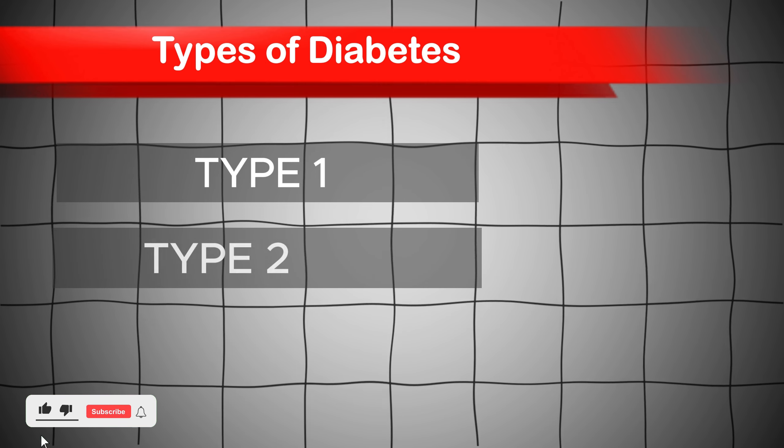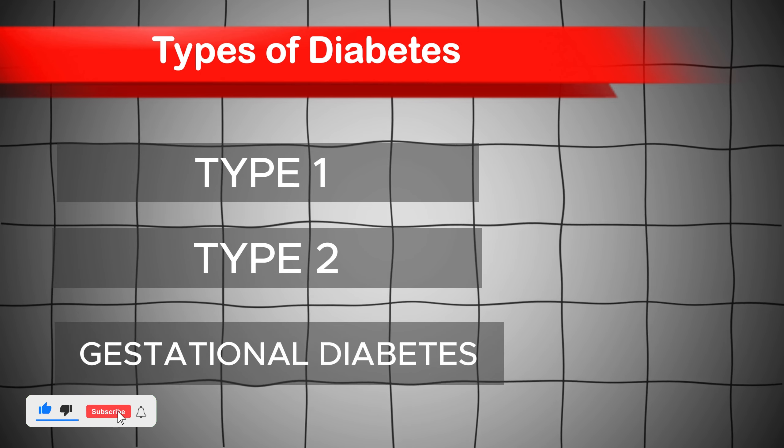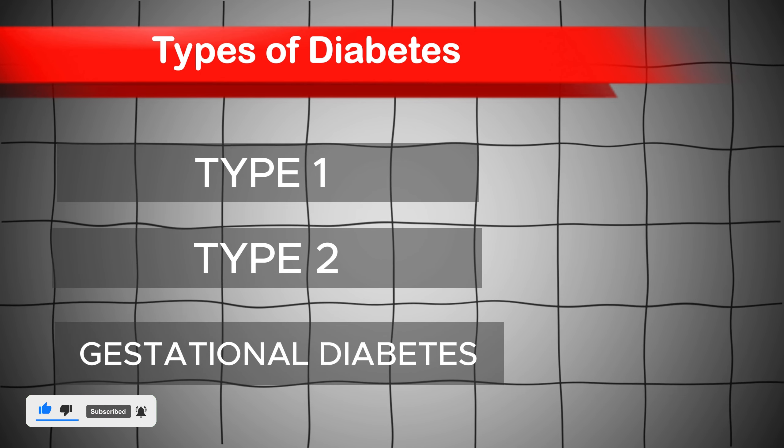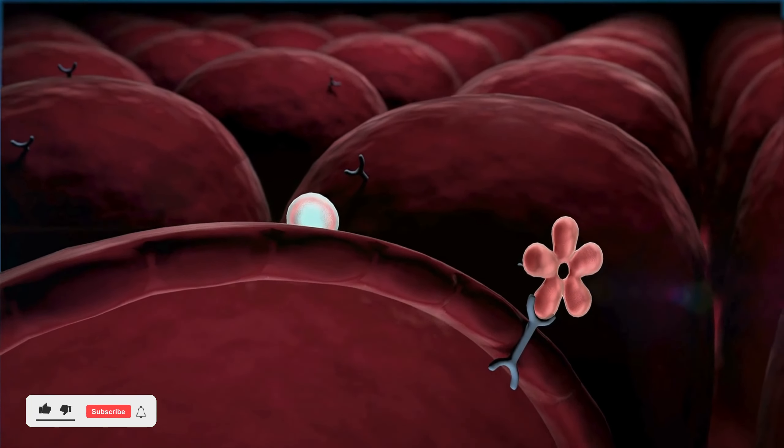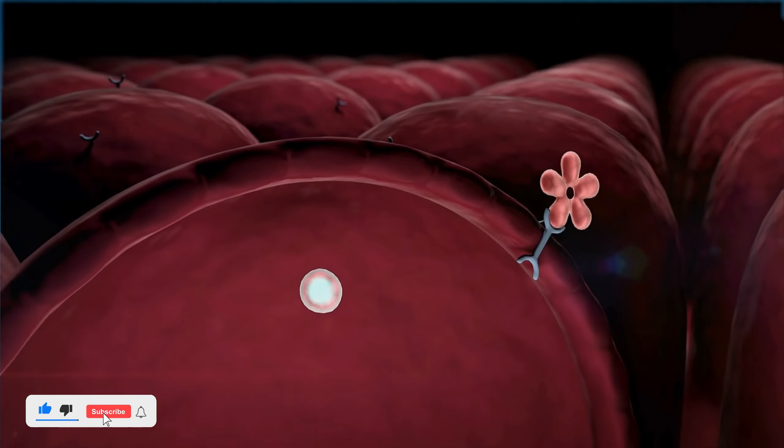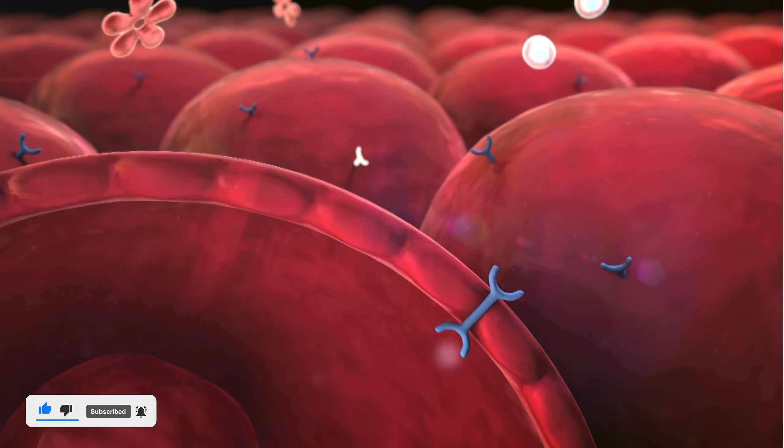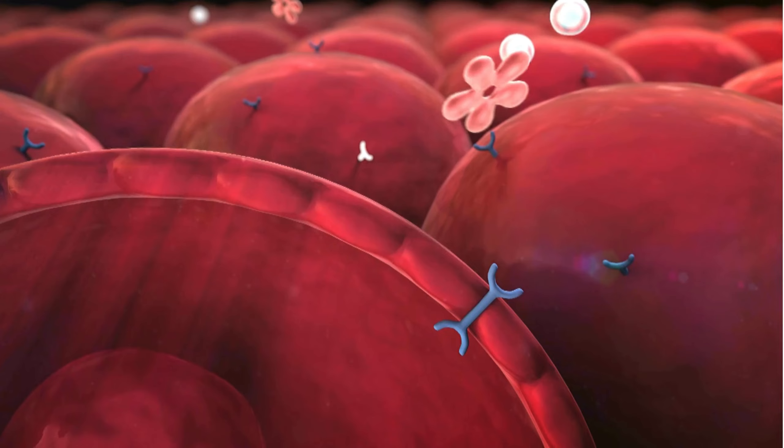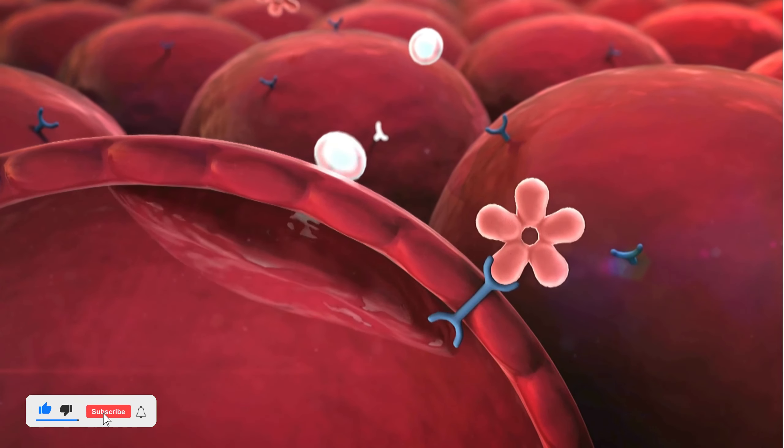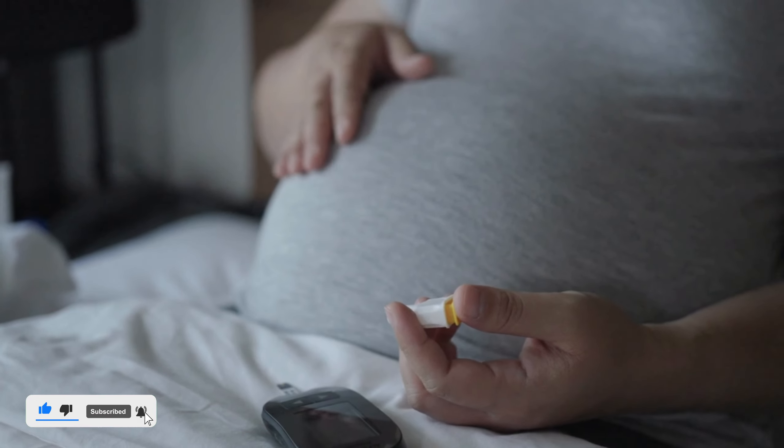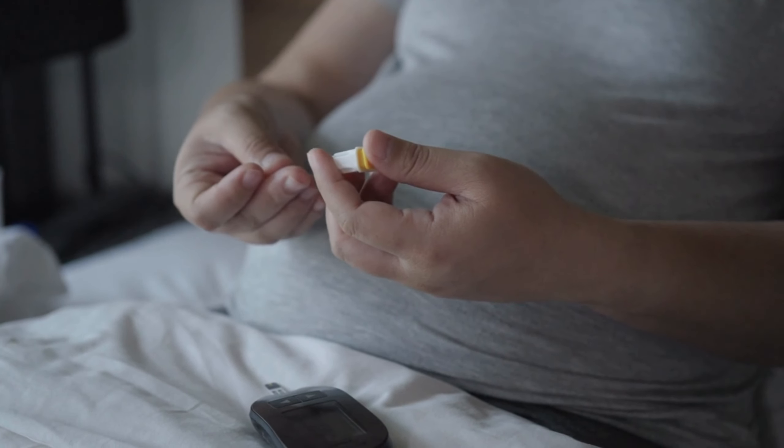Type 1, type 2, and gestational diabetes. Type 1 diabetes occurs when the body's immune system attacks insulin-producing cells. Type 2 diabetes, which is the most common, occurs when the body becomes resistant to insulin. Gestational diabetes occurs during pregnancy and usually ends after birth.